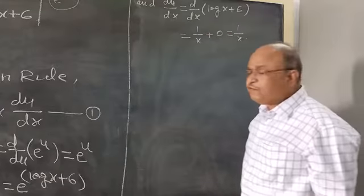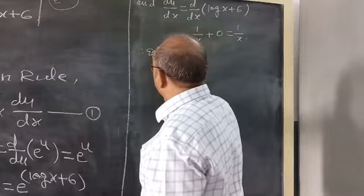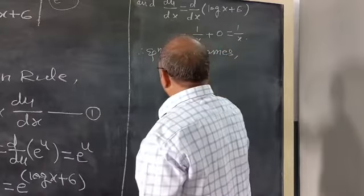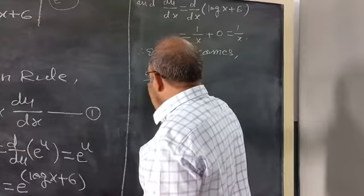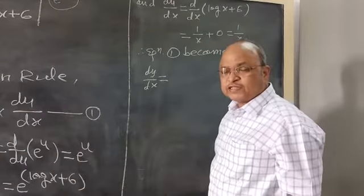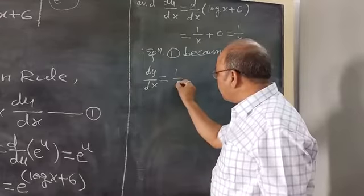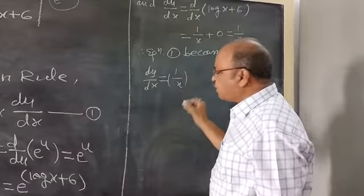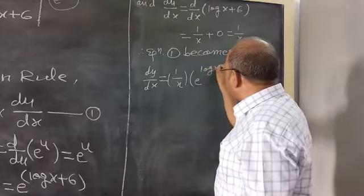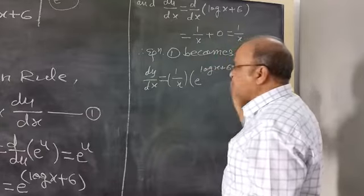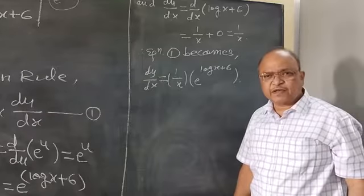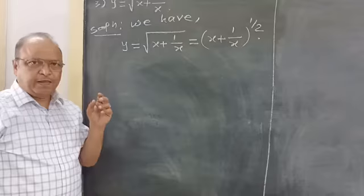Now putting both values into equation 1: dy by dx is equal to the product of the two factors. The first factor is 1 upon x, and the second factor is e raised to the power (log x + 6). So dy by dx = (1/x) into e raised to the power (log x + 6).